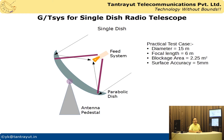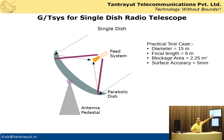Assume a parabolic dish with a diameter of 15 meters and a focal length of 6 meters, giving an f/D ratio of 0.4. The blockage area — blocked by the feed system and support struts — is of the order of 2 square meters. No real dish is an ideal paraboloid, so there will be surface inaccuracies; I assume the standard deviation of the surface error is about 5 millimeters. Throughout the web series we worked in L-band, so let's use 1420 MHz as the sample calculation frequency for G/Tsys.